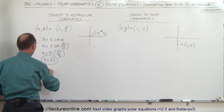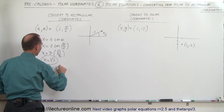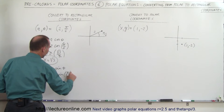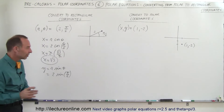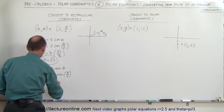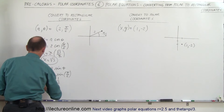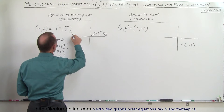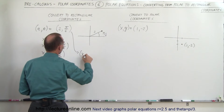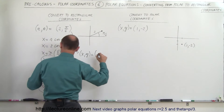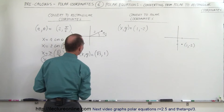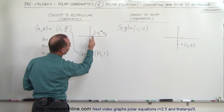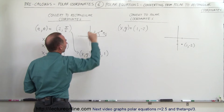For the Y coordinate, Y equals R times the sine of theta — that's 2 times the sine of pi over 6. Pi over 6 is 30 degrees, and sine of 30 degrees equals one half. So Y equals 2 times one half, which equals 1. Therefore the rectangular coordinates are (square root of 3, 1). Square root of 3 is a little less than 2, and 1 is the vertical distance, so that looks correct.